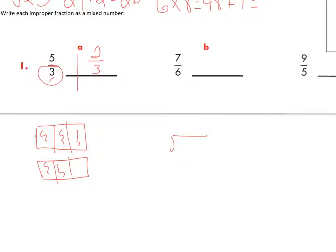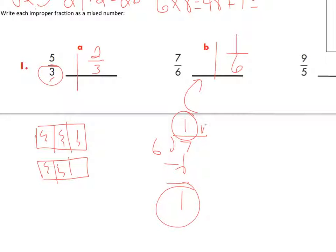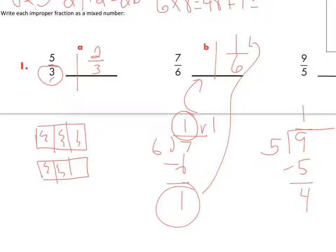Seven-sixths — I think I'll use the division way. Seven divided by groups of six: one group fits, that's six, and I've got one left over. So that means one and one-sixth — this becomes my large number, my remainder becomes my numerator. Nine-fifths: nine divided into groups of five — one group of five, subtract, leaves four. So that means one and four-fifths. Remember, my denominator stays the same.